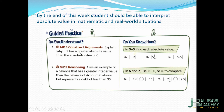Now explain why negative 7 has a greater absolute value than 6. Because the absolute value of 6 is 6, and the absolute value of negative 7 is 7. Since 7 is greater than 6, the absolute value of negative 7 is greater.